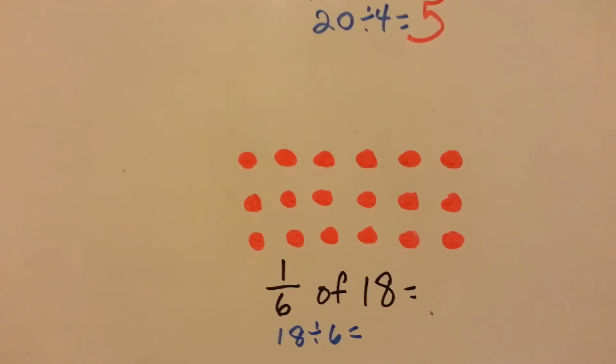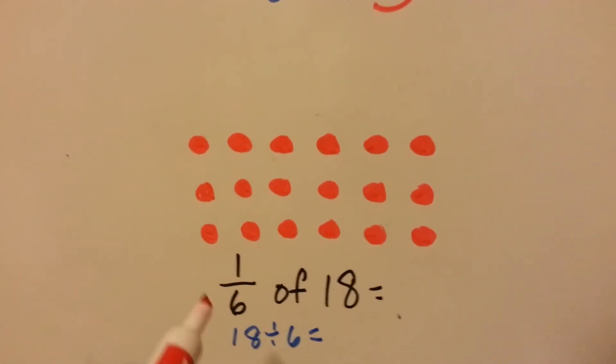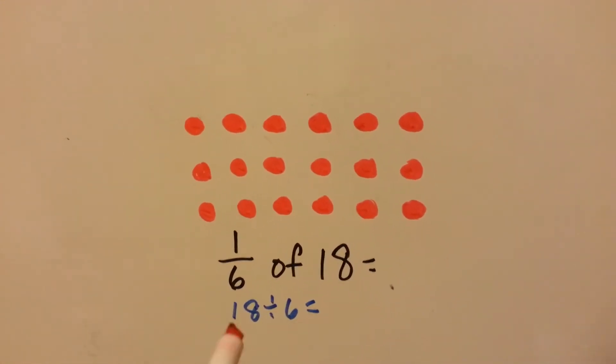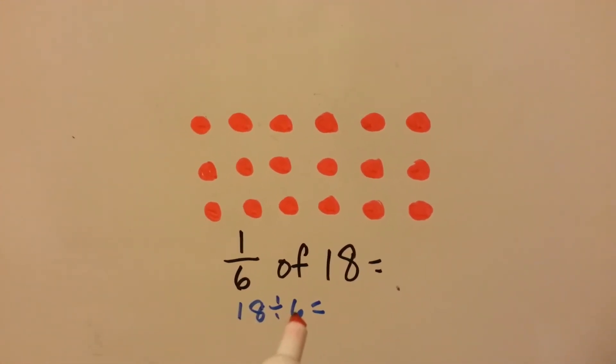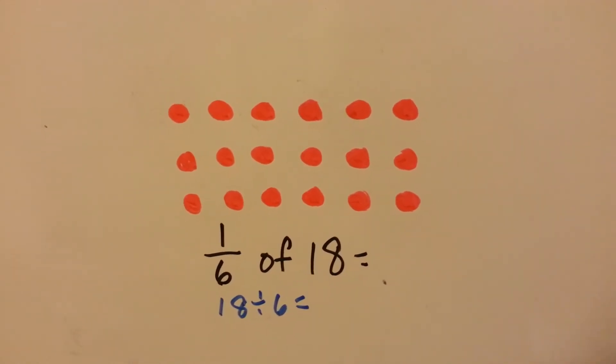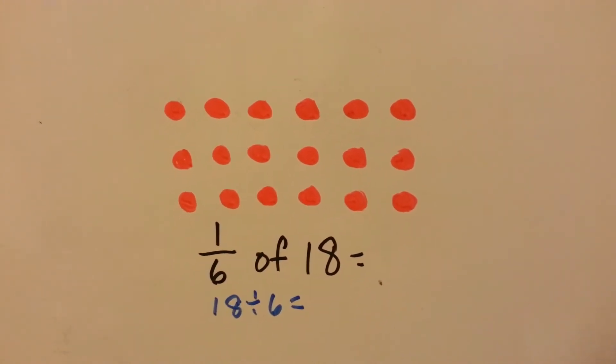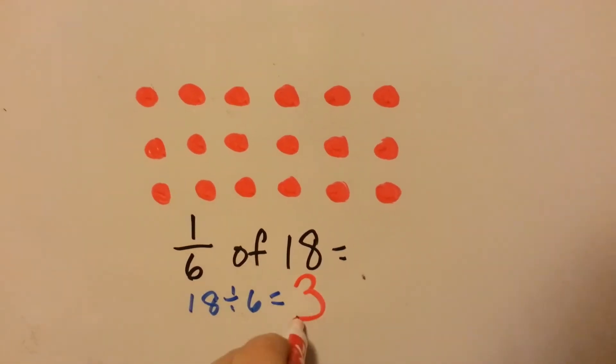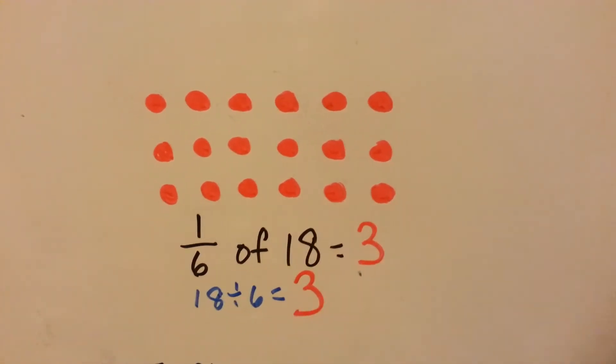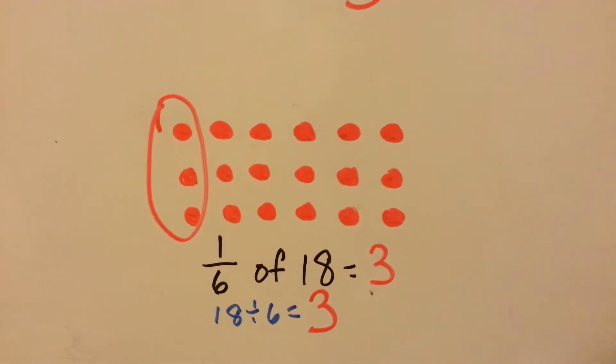Now we have 18 red dots. We need to find 1 sixth of 18. So we're going to divide 18 divided by 6. Do you know your times table? 6 times what is 18? 6 times 3. So 1 sixth of 18 is going to be 3. We'll circle 3 of them.